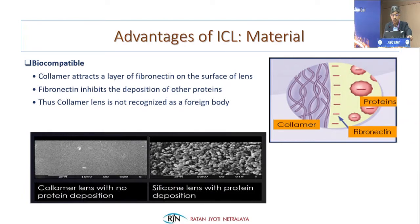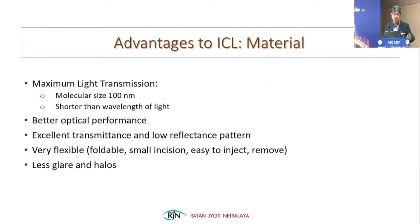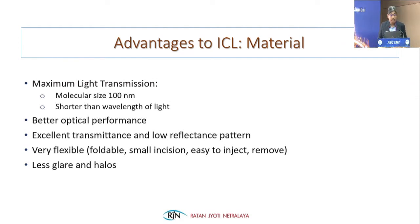The collamer material on the left versus silicone on the right — you can make out the clarity of the collamer material. The polymer molecular size is 100 nanometers shorter than the wavelength of light, giving maximum light transmission and better optical performance, excellent transmittance, low refractive index, and very flexible — foldable through a small incision, easy to inject and easy to remove. There are fewer glare and halo issues with these lenses.